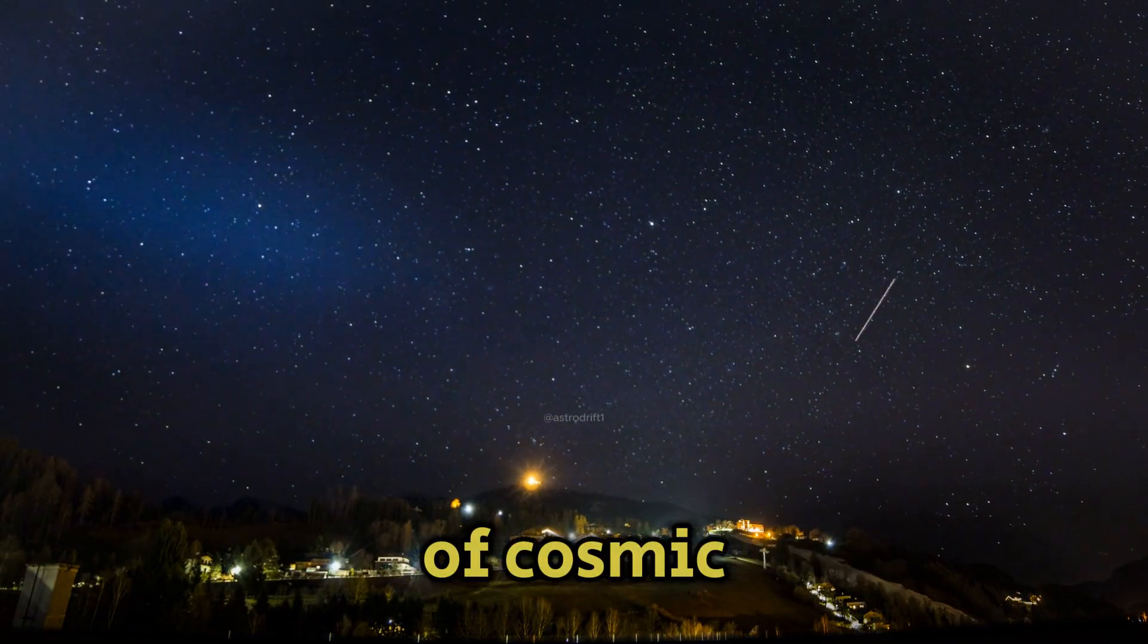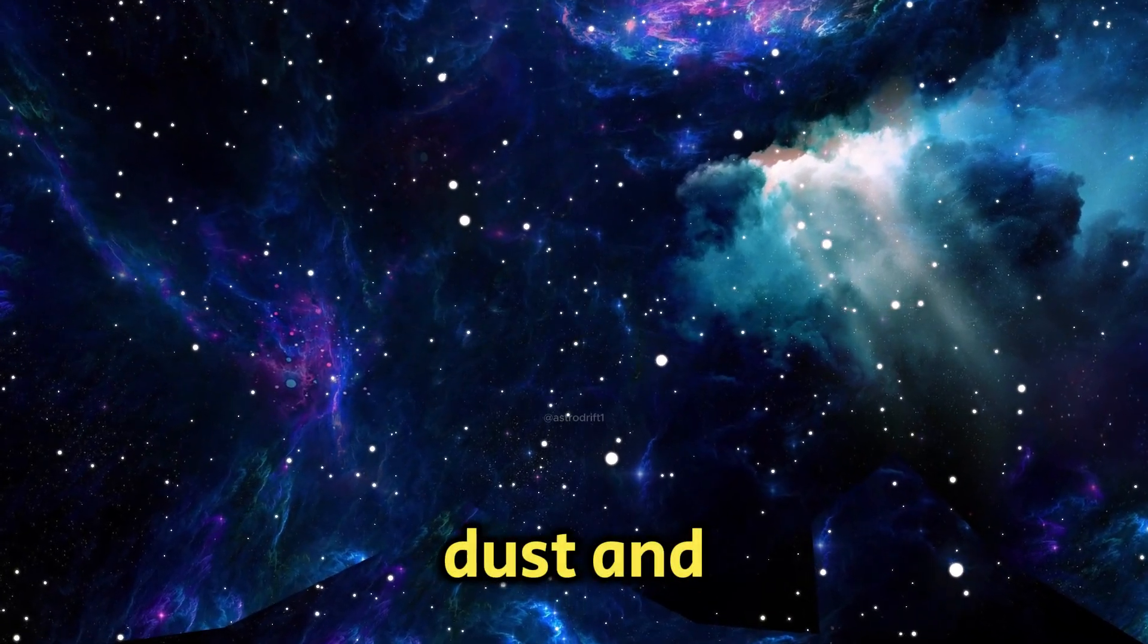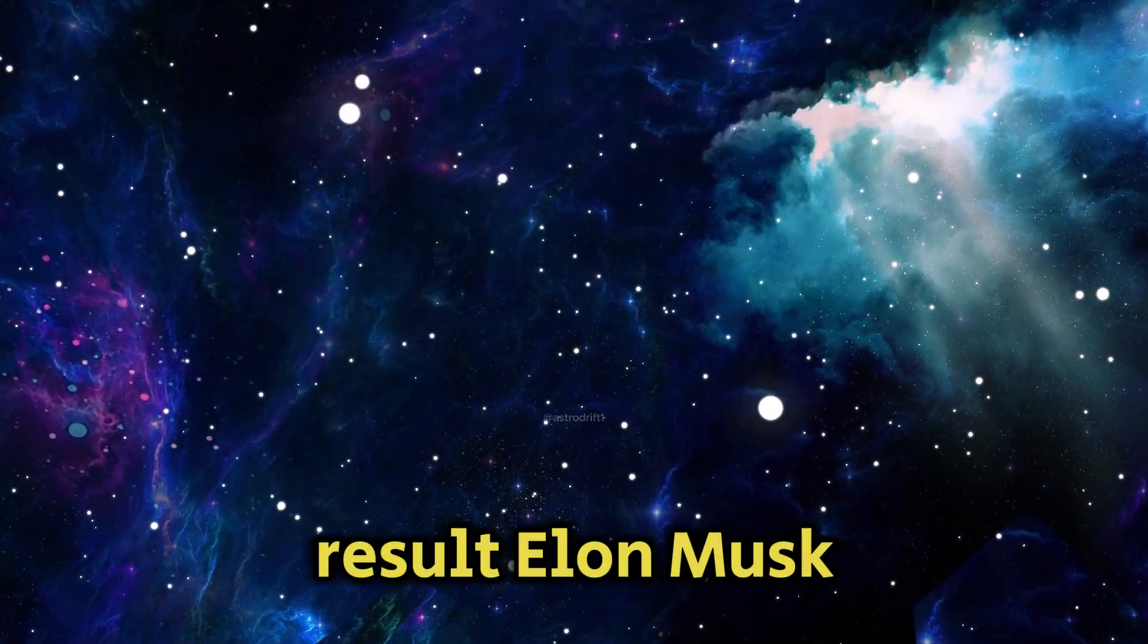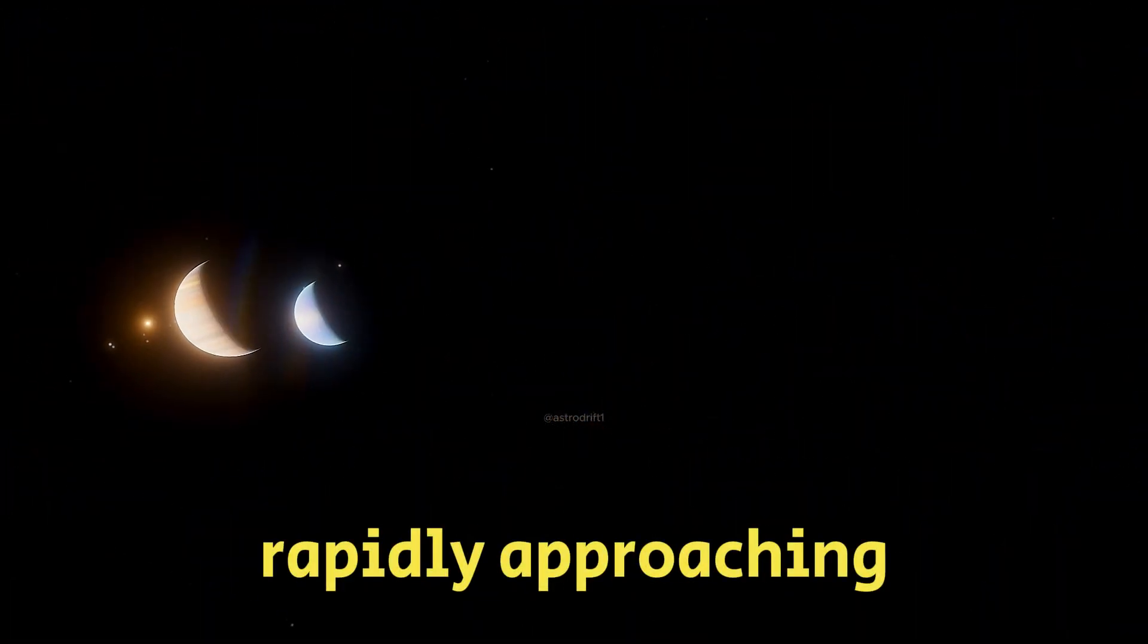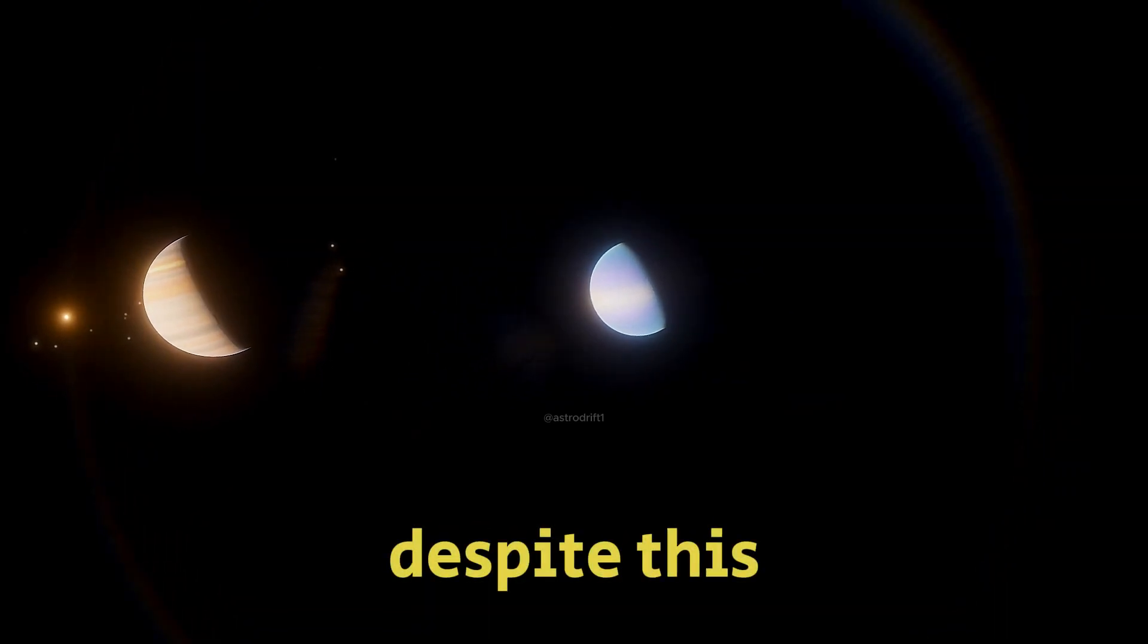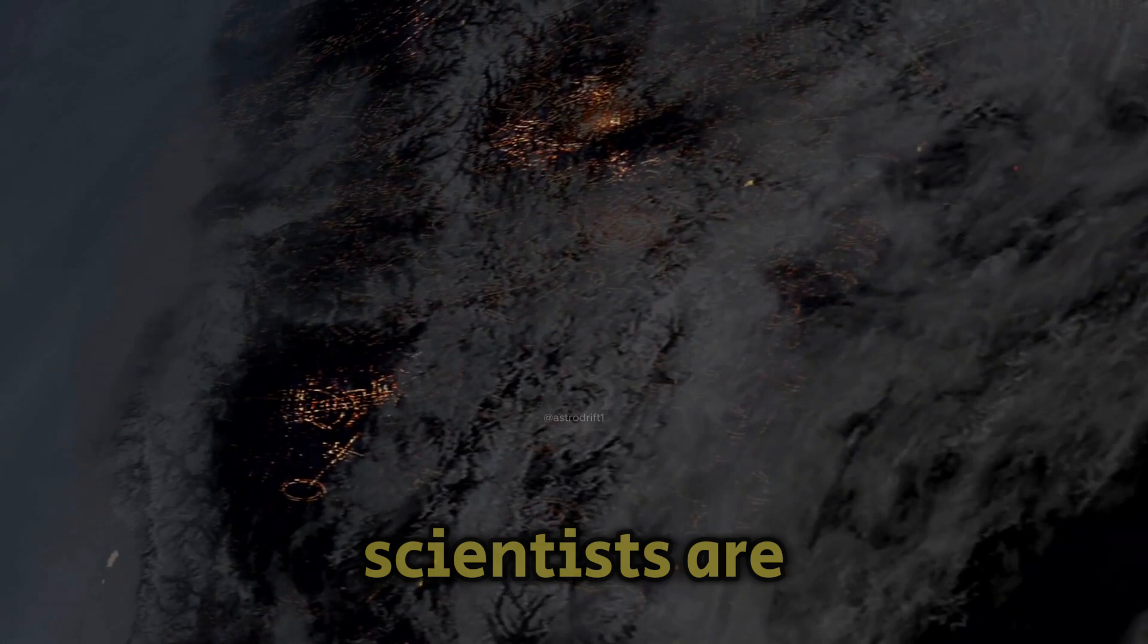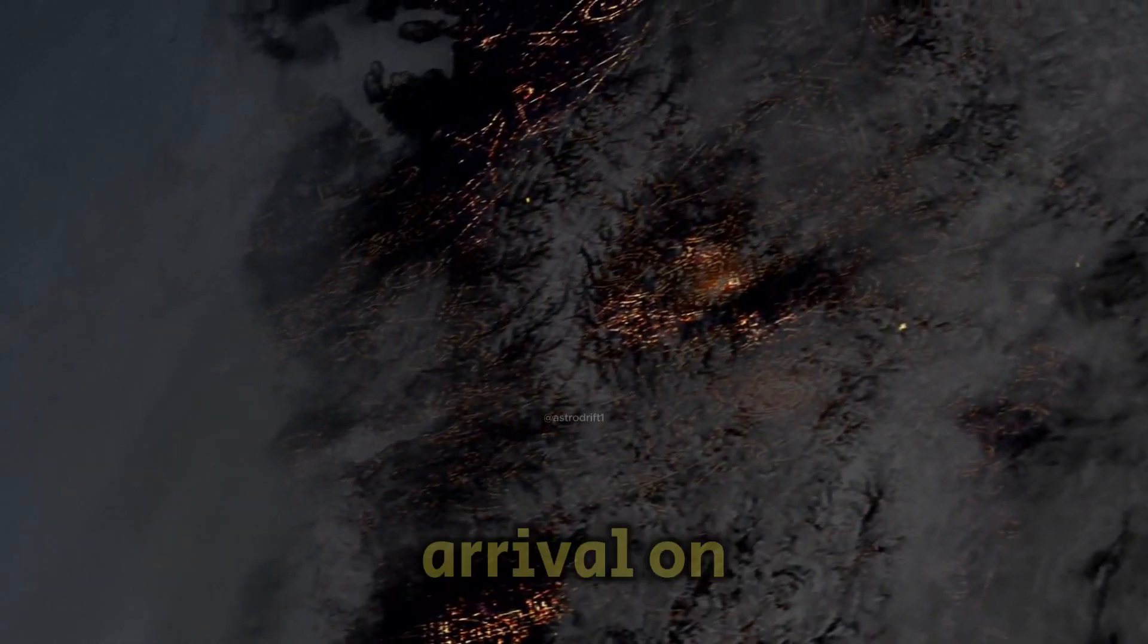However, considering the number of cosmic encounters Oumuamua has had, it would have likely stirred up dust and debris, allowing the stars to intermingle. As a result, Elon Musk and other astronomers believe that Oumuamua is rapidly approaching Earth. They even predicted that it would enter the Kuiper belt this year. Despite this, no one has been able to locate Oumuamua directly. Scientists are working with the data they can gather to determine its trajectory and potential arrival on Earth.